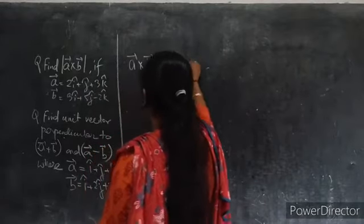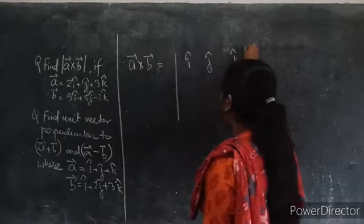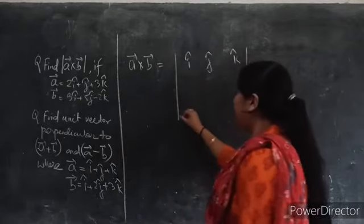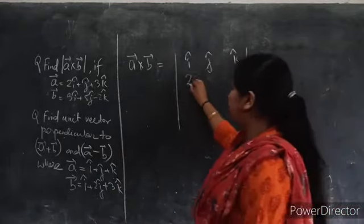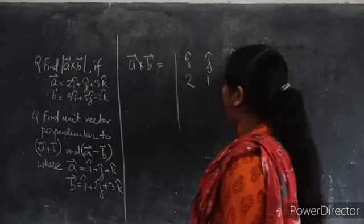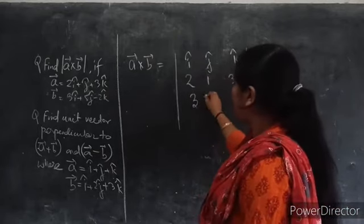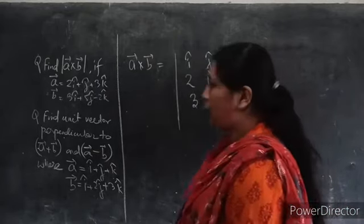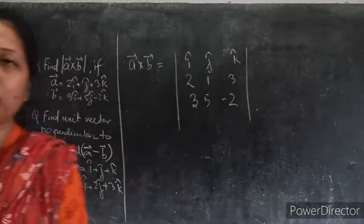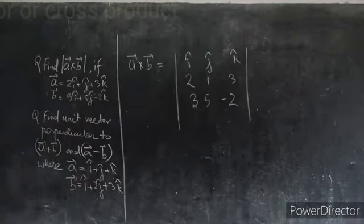First you have to write i cap, j cap and k cap. And you have to write the coefficients: 2, 1, 3 for vector A and 3, 5, minus 2 for vector B. In this way, we first place these coefficients in the determinant.